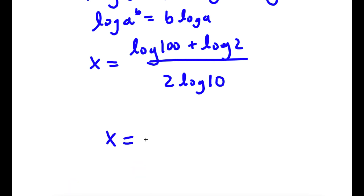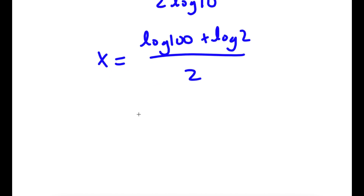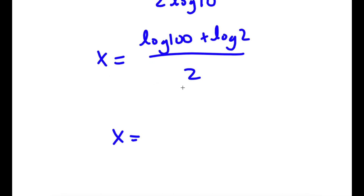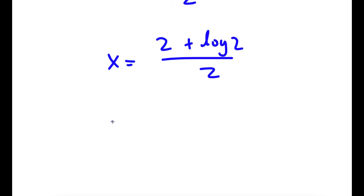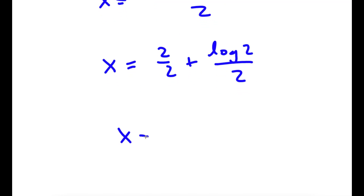So now I have x is equal to log 100 plus log 2 over 2. And log 100 again equals 2, so I have 2 plus log 2 over 2. This is the same thing as 2 over 2 plus log 2 over 2, and 2 over 2 is obviously 1, so I have 1 plus log 2 over 2.